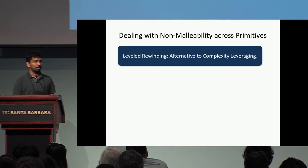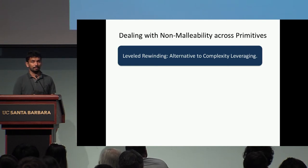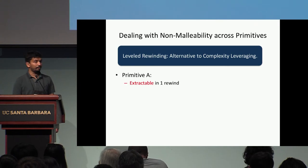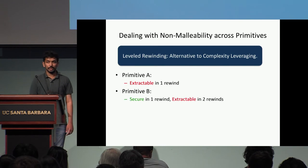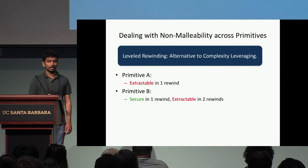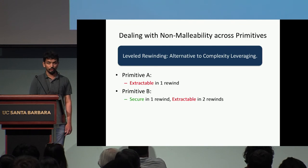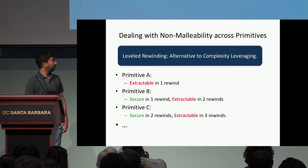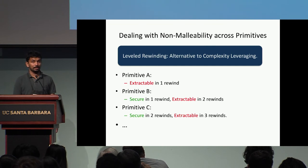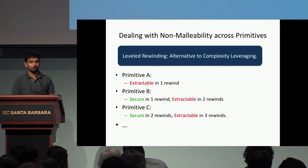At a high level, leveled rewinding works as follows. Suppose we have three primitives A, B, and C running in parallel. Primitive A is designed so its secret can be extracted using one rewind. Primitive B's secrets are secure under one rewind but can be extracted under two rewinds. Primitive C's secrets are secure under two rewinds but can be extracted under three rewinds, and so on.